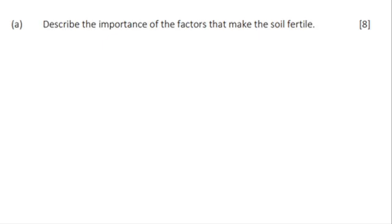These are some of the factors that make the soil fertile. Under organic matter, it is able to make the soil fertile in different ways. Number one, it makes the soil fertile through nutrient source, meaning that it provides nutrients to the soil. It also allows the soil to be fertile by providing a very good soil structure and ensuring that the soil is very healthy. Through the decomposition of plants and animals, organic matter provides essential nutrients like nitrogen, phosphorus, and potassium, and this improves the soil structure by enhancing water retention and aeration.